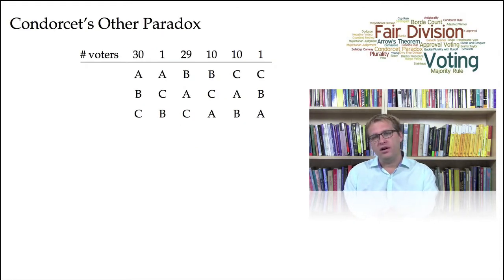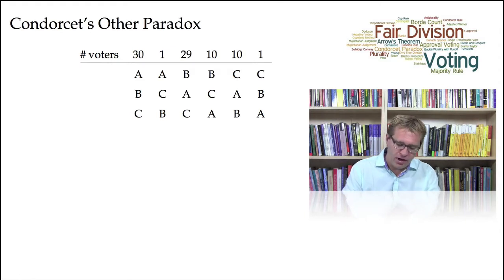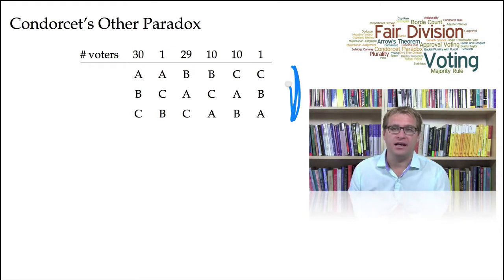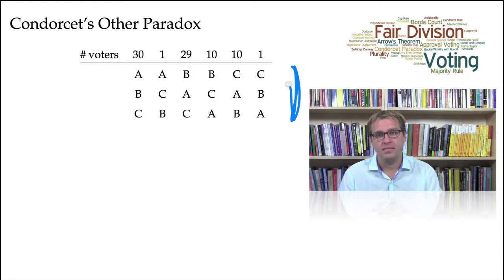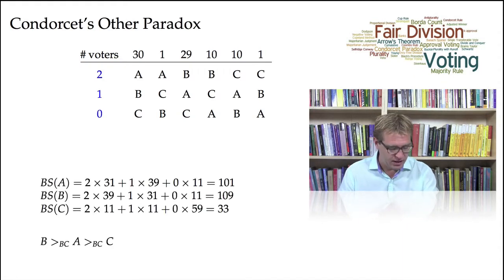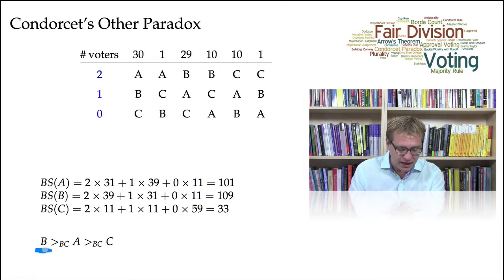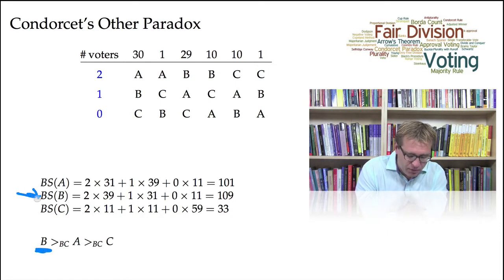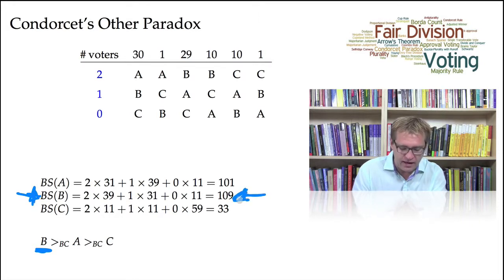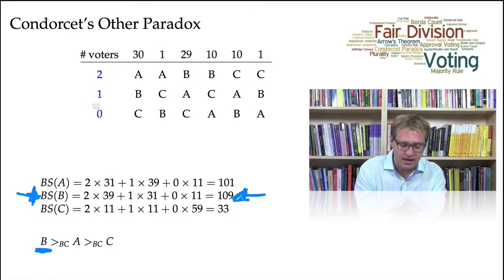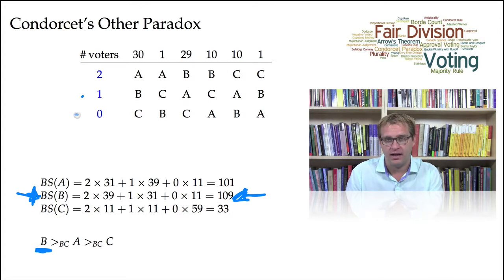Let's consider a group of 81 voters who have the following rankings over three candidates, A, B, and C. According to the Borda count, candidate B should be declared the winner — that is, B has the highest Borda score. Recall that the Borda score is calculated by assigning two points to the top-ranked candidate, one point to the second-ranked candidate, and zero points to the last-ranked candidate.